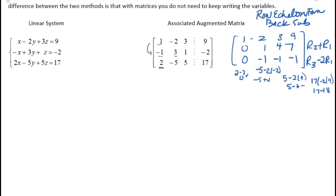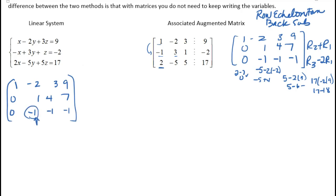We're getting closer. So I have: row 1 is 1, negative 2, 3, 9; row 2 is 0, 1, 4, 7; row 3 is 0, negative 1, negative 1, negative 1. I need that negative 1 in row 3 to be zero. If I add row two and row three, I get: 0, 0, then 4 minus 1 is 3, then 7 minus 1 is 6.